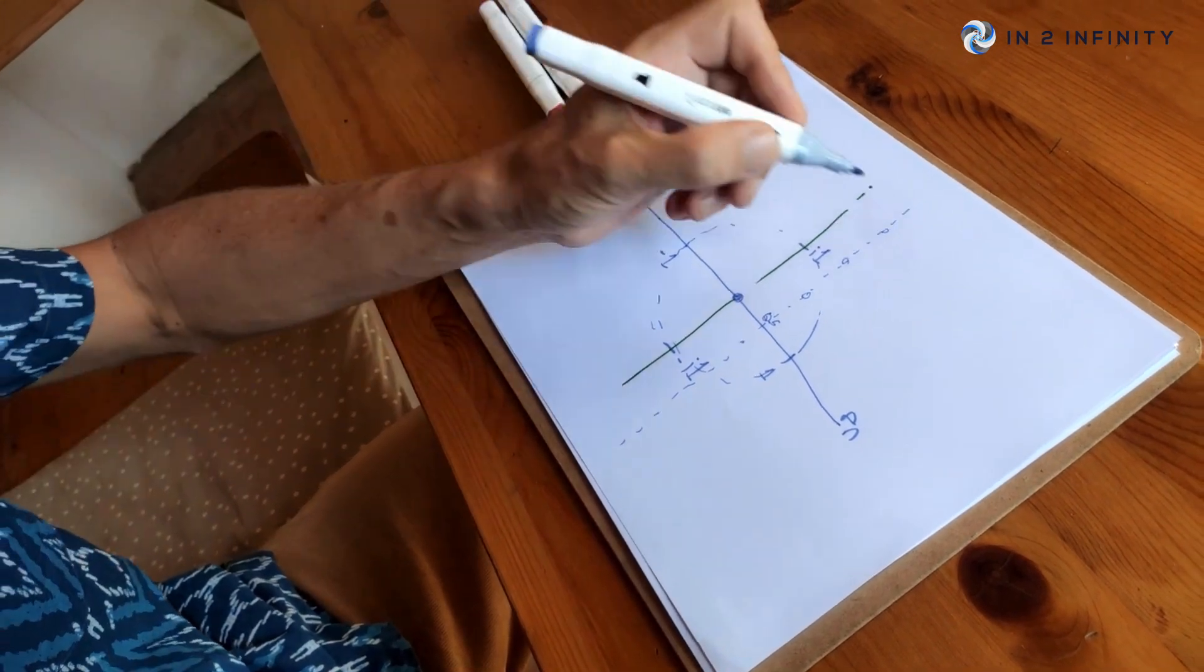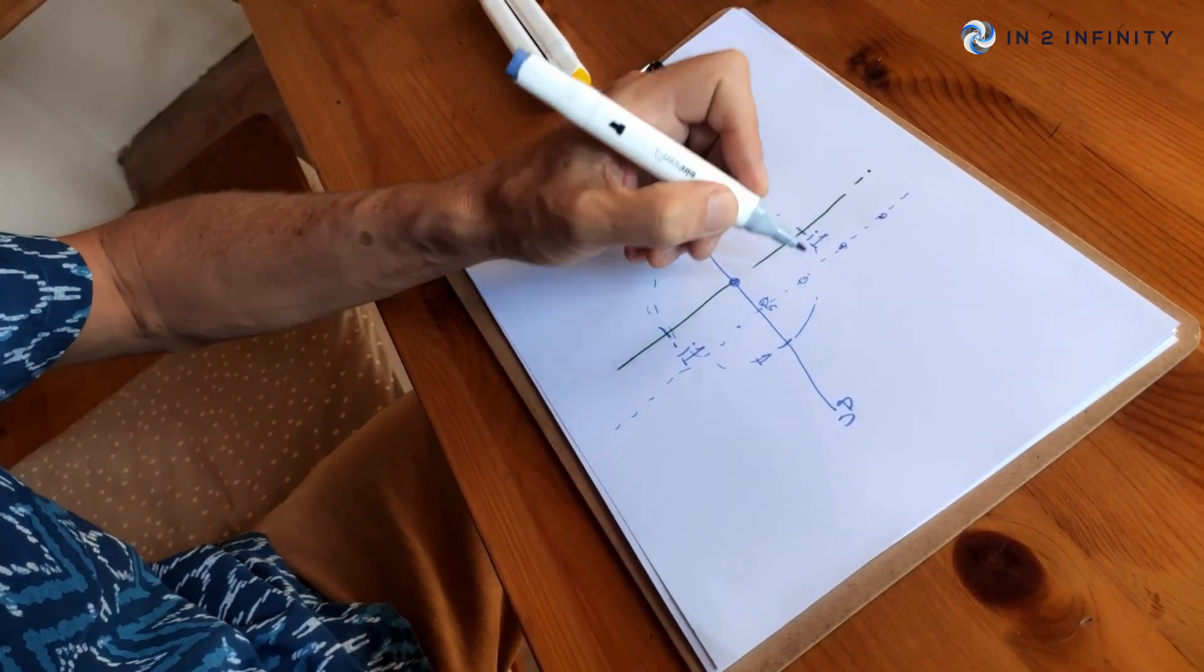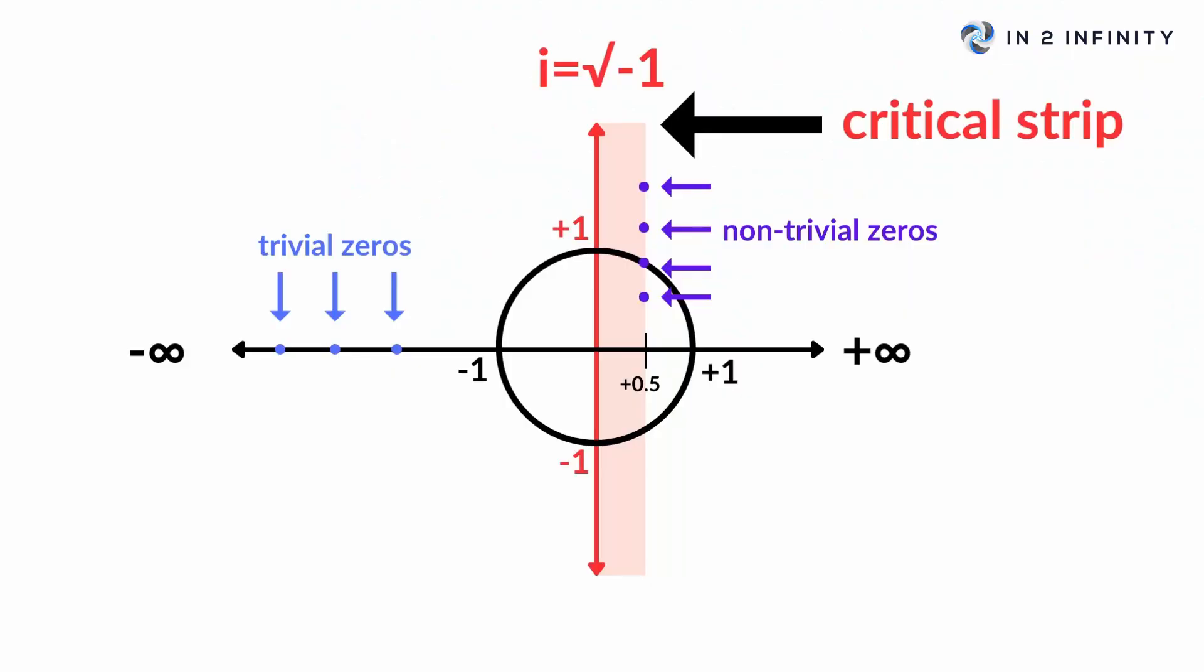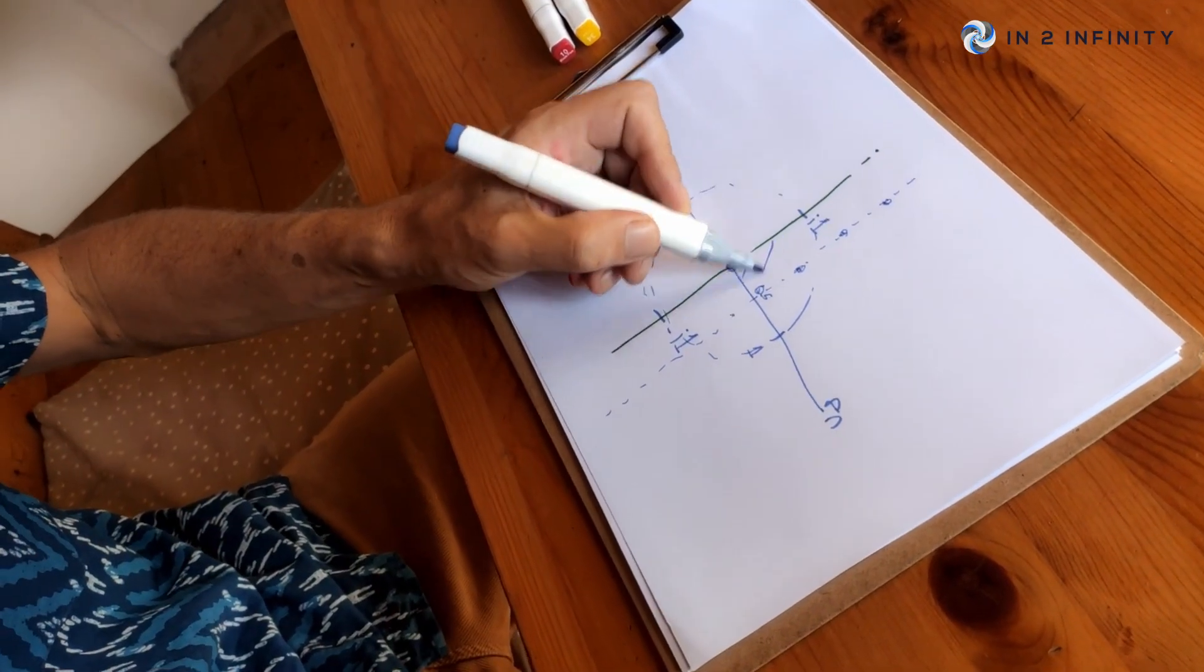So the question with the Riemann hypothesis is why do all of the zeros end up on this line here? Do they all end up there or is there something else going on? It's a very important question because it's got a lot to do with primes.